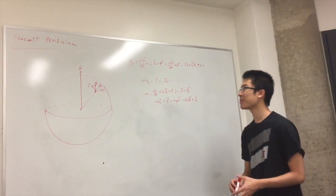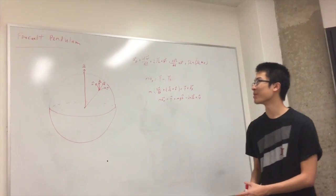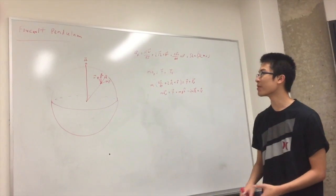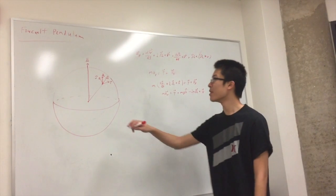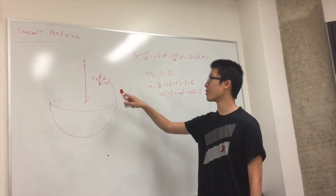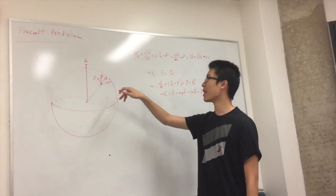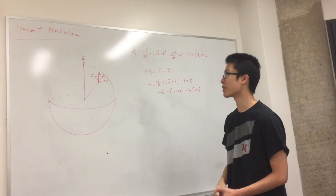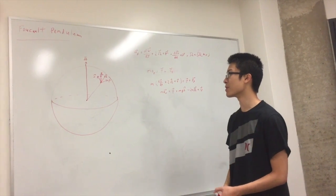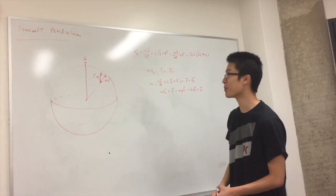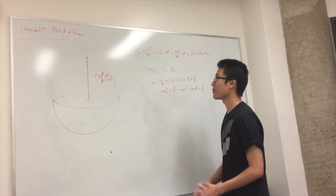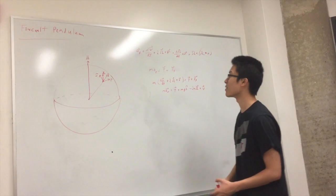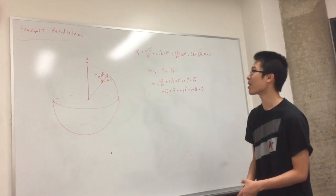Alright, so for the Foucault pendulum problem, we just have to define a reference frame. We're going to define our i component to be east-west, and we're going to define our j component to be north-south, because that's what we can measure. And we also have k pointing straight toward the center of the earth, because that's where gravity points.